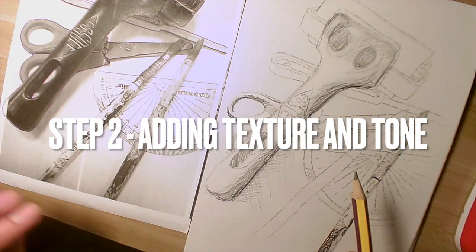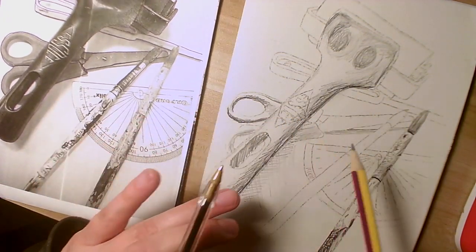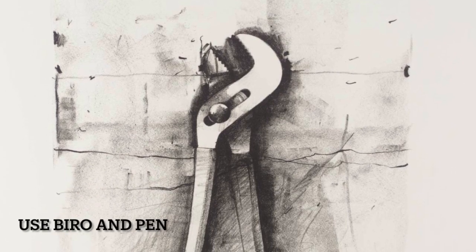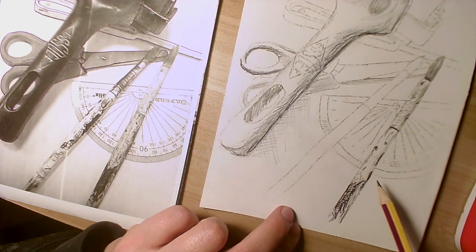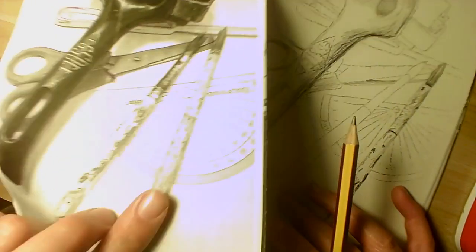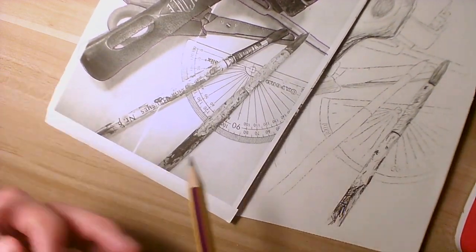Right, okay, so I've started adding biro and pencil now to my image in the style of Jim Dine. He did quite scribbly lines. So I've added some in the pencil. I've gone over some bits with pen. So in the brushes, there was a lot of texture on there. So I've gone in with biro and pencil. I'll go over this paintbrush now just to show you what I did.